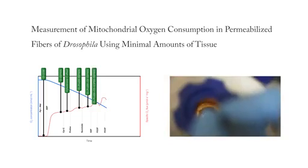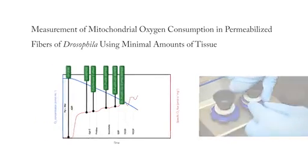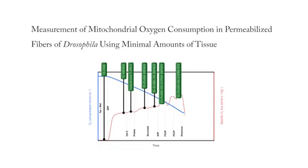The thoraces are then transferred into the chambers of a respirometer and mitochondrial oxygen consumption is measured with a combination of different substrates, uncouplers and inhibitors.